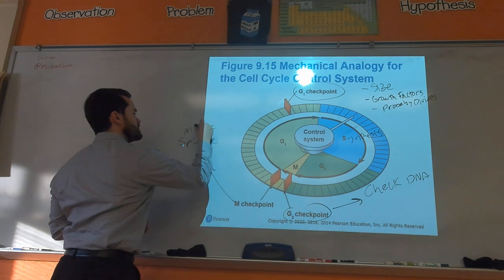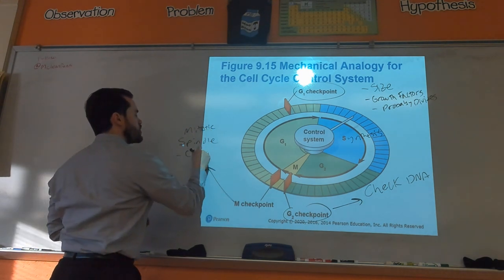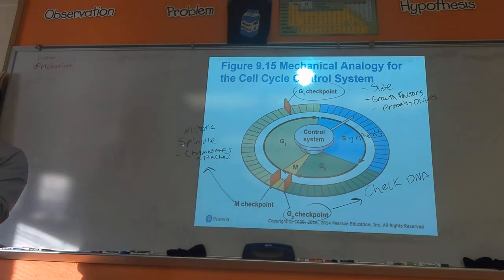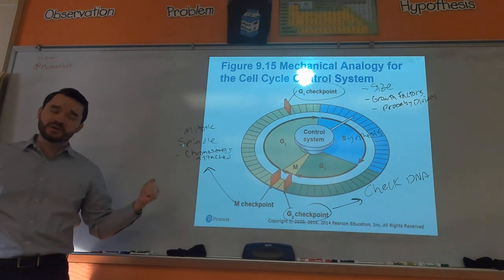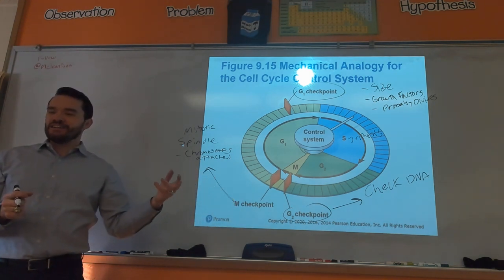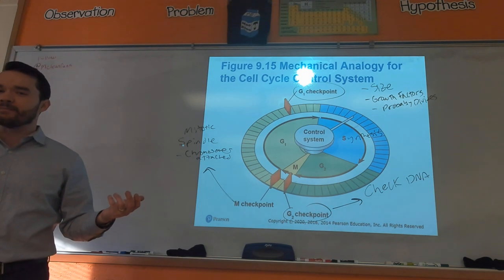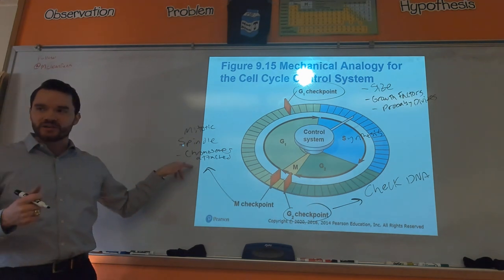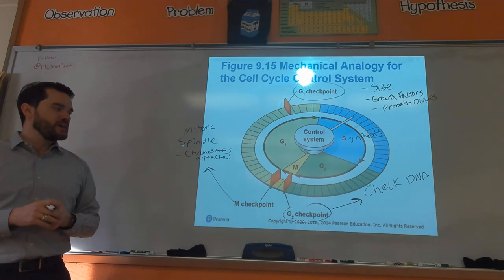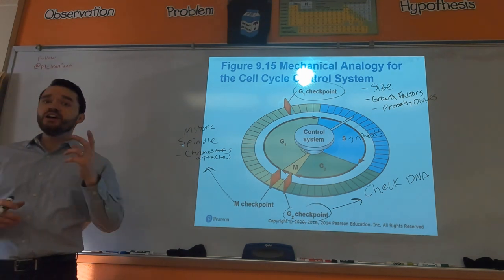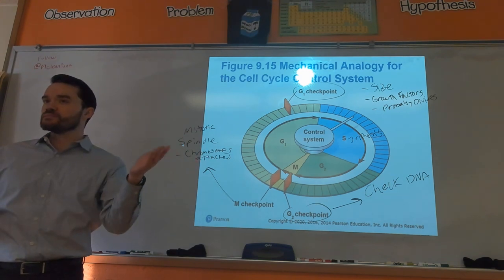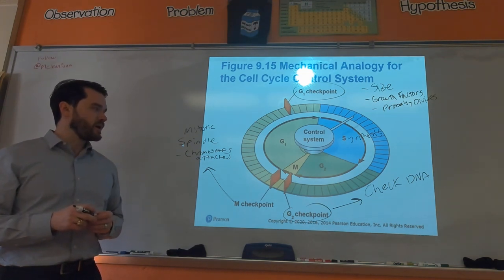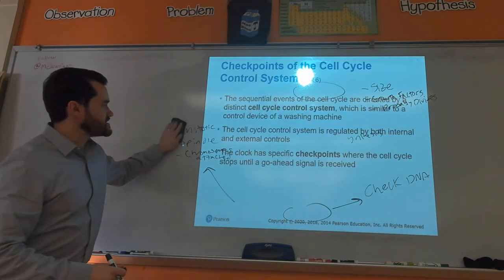At the M checkpoint, during mitosis, we check whether the chromosomes are attached to the mitotic spindle. Think of it like an amusement park ride — you don't start the ride before checking everyone's strapped in. If chromosomes aren't attached to the spindle, the new cells could end up with the wrong number of chromosomes — too few or too many — which could lead to a genetic disease.